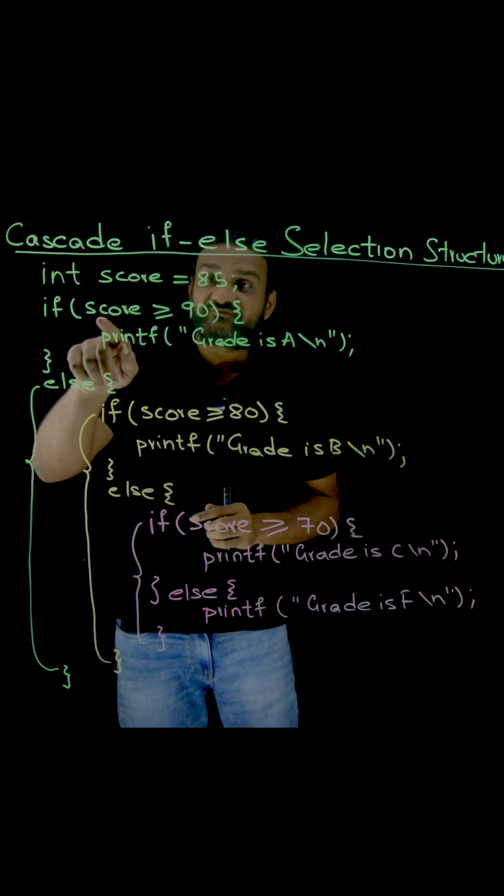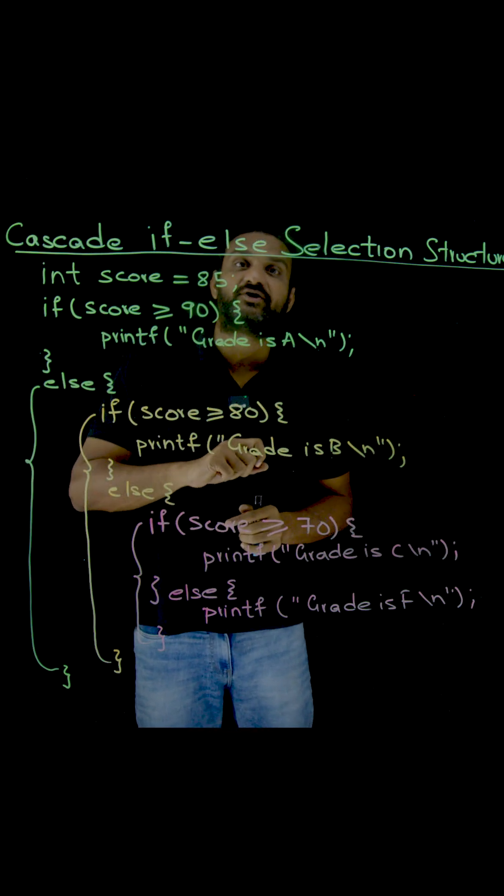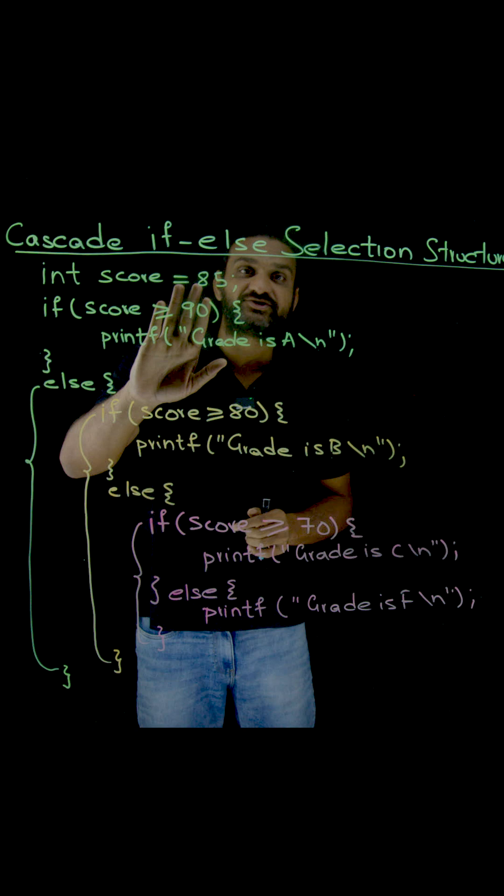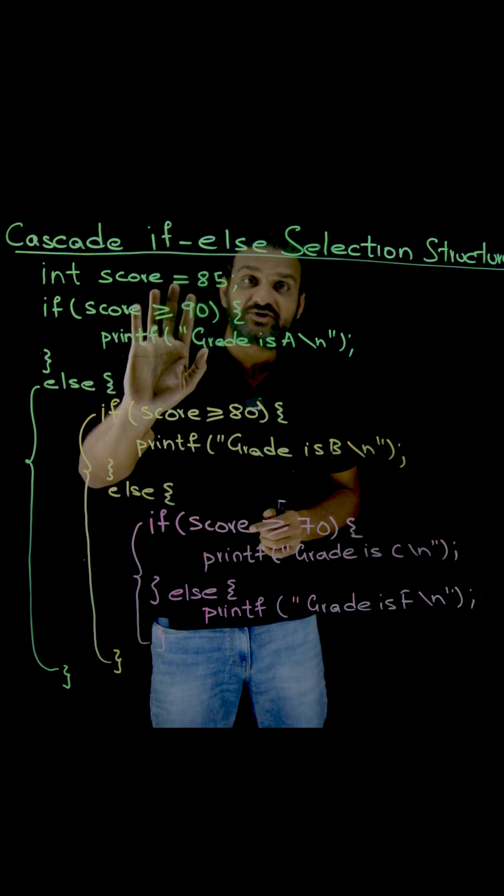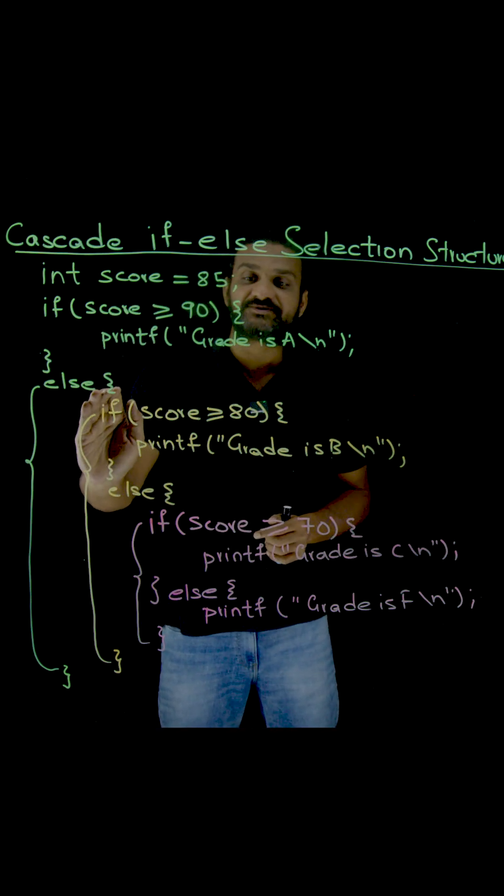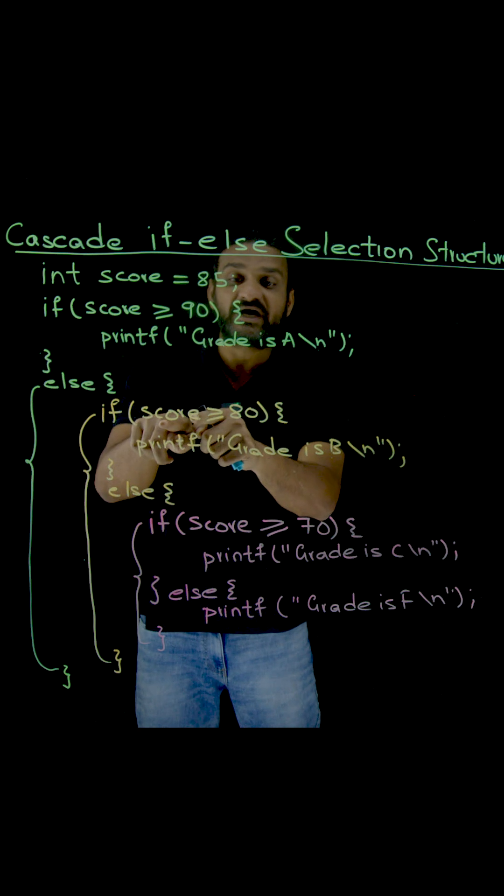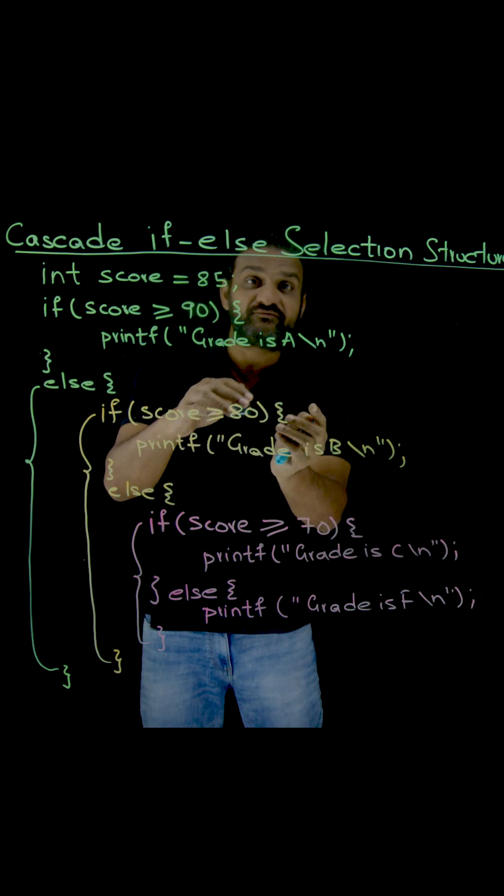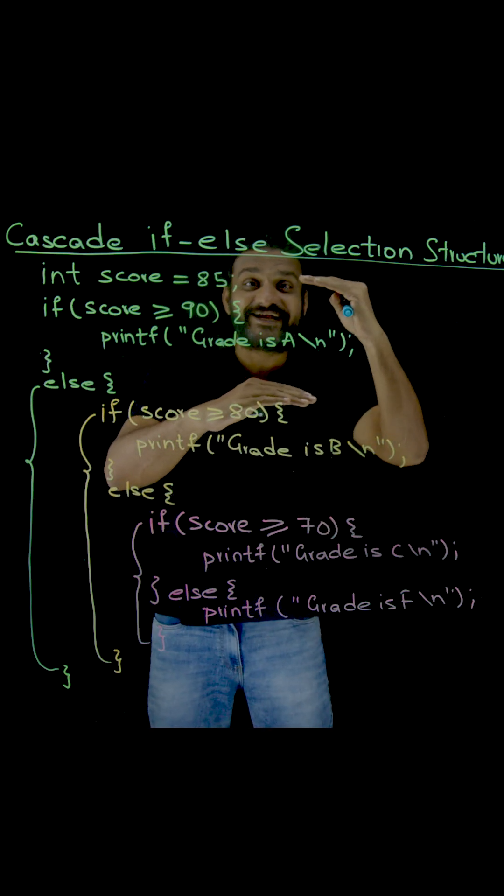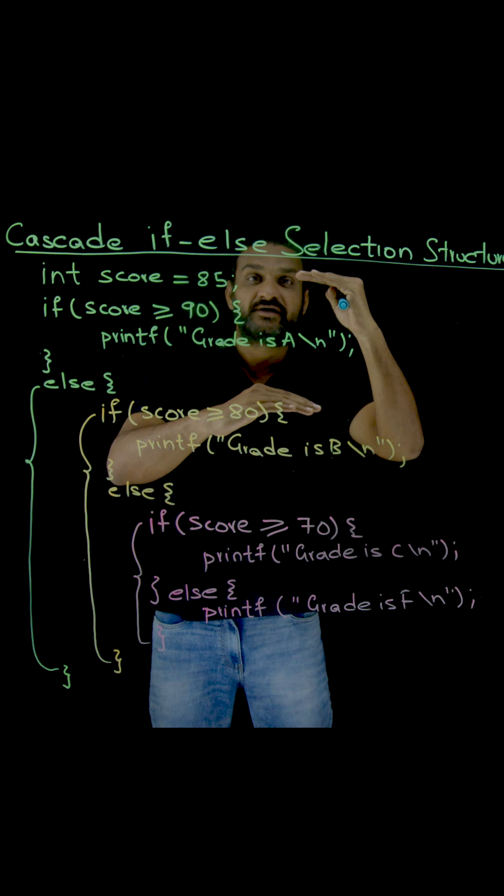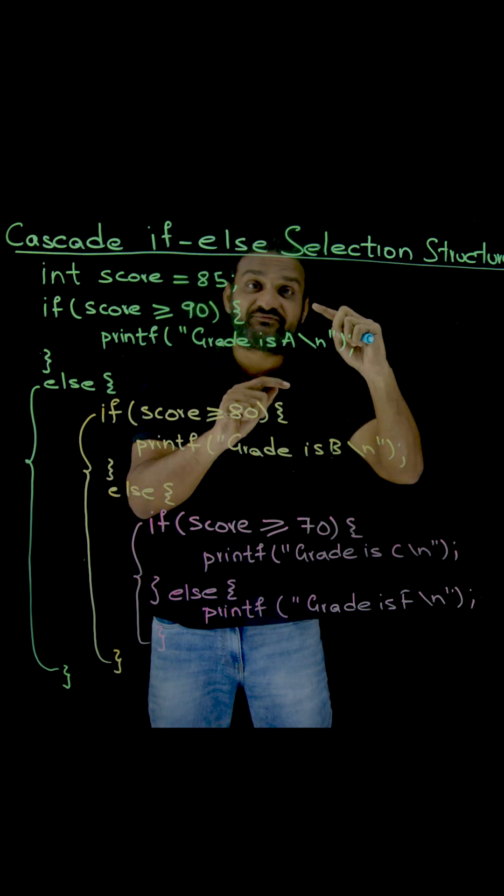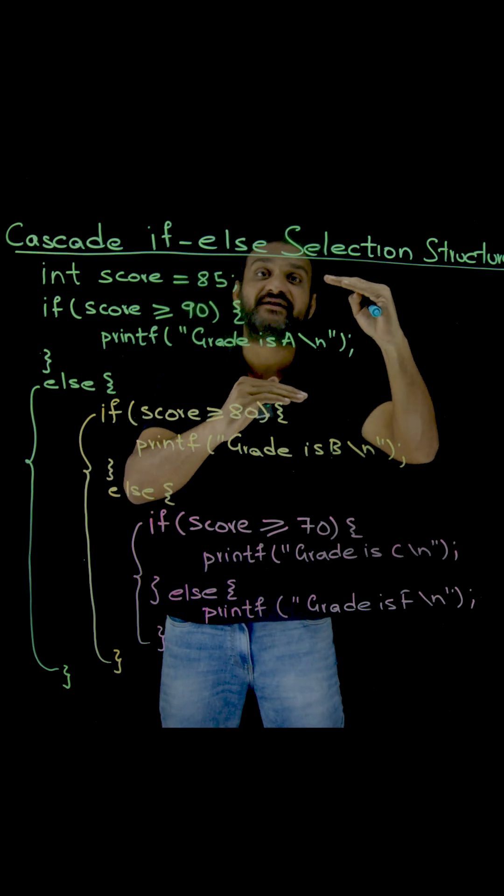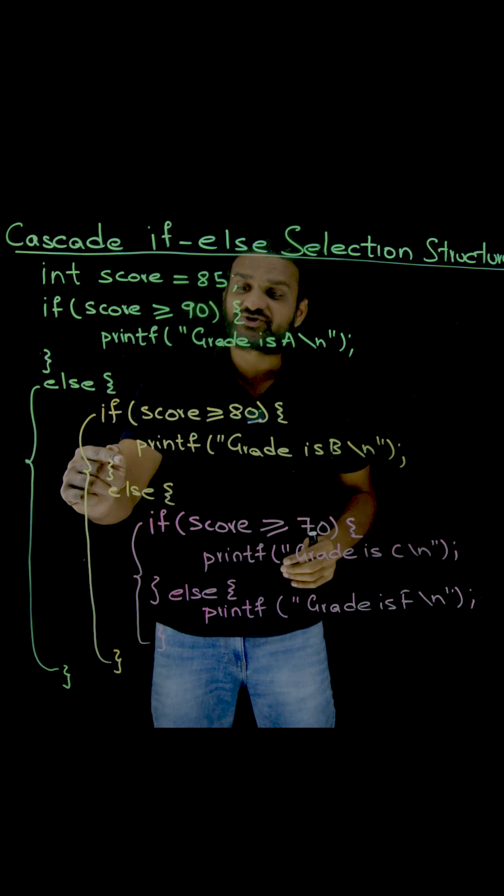Now what's happening here is we have verified whether the score is greater than 90 or not. Is it true? No it is not true. So we have come into this else part. In this else part we are verifying whether the score is between 80 and 90 or not. Is it true? Yes, 85 is between 80 and 90. So we are going to allocate a grade of B.